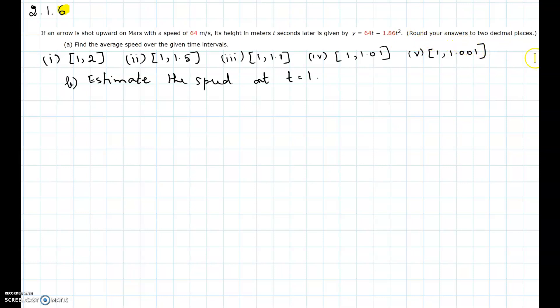Round your answers to two decimal places. Part a: find the average speed over the given time intervals, estimate the speed at t equals 1.